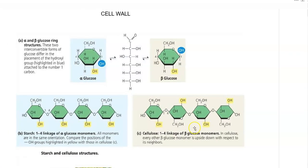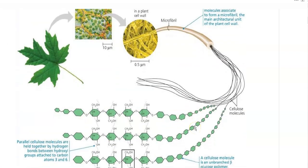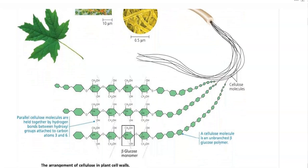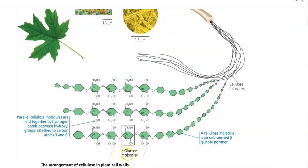In a microfibril, one chain is the first cellulose molecule, the second is another chain, and the third is yet another chain of cellulose molecules. They are bonded together by a beta 1-4 linkage. At the same time, the adjacent cellulose molecules are bonded together with the help of hydrogen bonds.